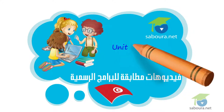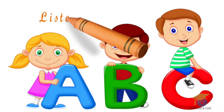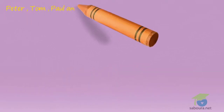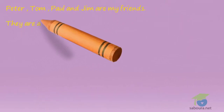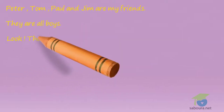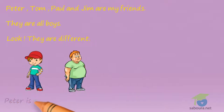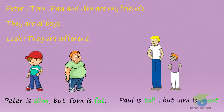Unit 4, Lesson 3: My Friends. Listen and say. Peter, Tom, Paul, and Jim are my friends. They are all boys. Look, they are different. Peter is slim, but Tom is fat. Paul is tall, but Jim is short.